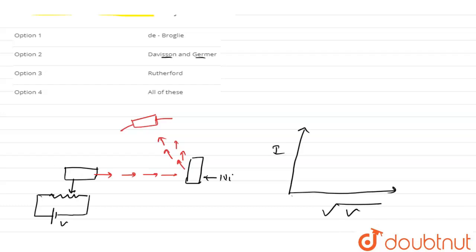The applied voltage is root V — the accelerated voltage — and we get a variation between intensity and applied voltage like this. We get this variation, and this variation proves that the electron is a wave.